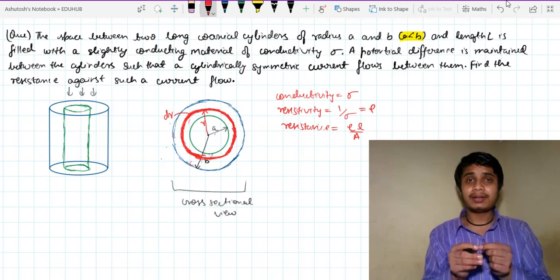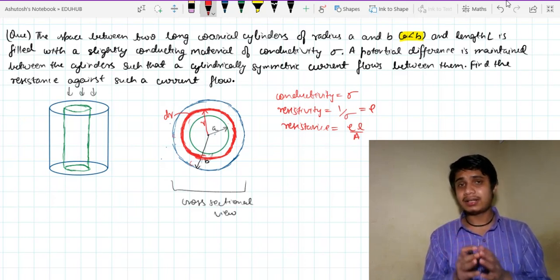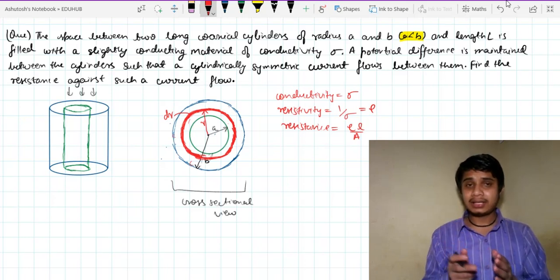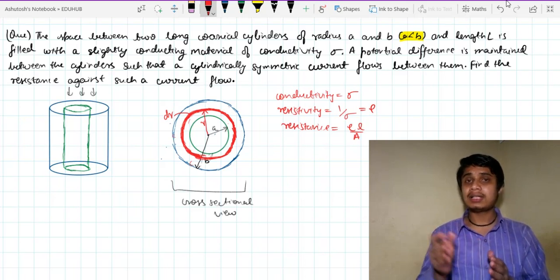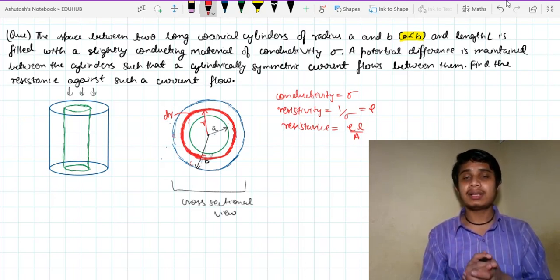That is, I just want to find the resistance of this cylindrical shell and then I will integrate over the volume of the cylinder to get the total resistance.